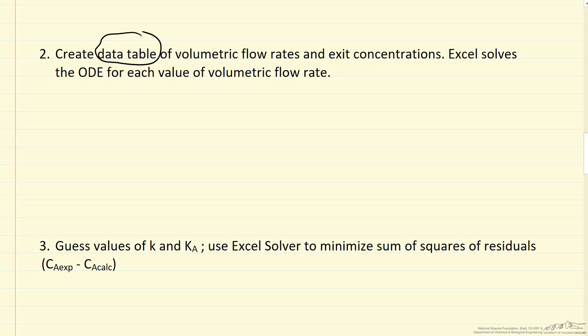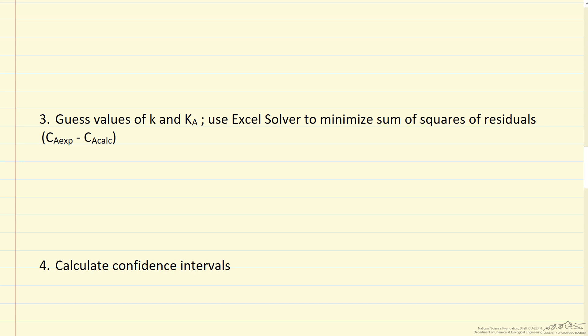And then we have to actually guess values for our two parameters and do a nonlinear regression by using Excel solver. That's minimizing the sum of squares, the difference between our experimental measurement of the exit concentration and our calculated value. And then finally, we're going to calculate confidence limits from this spreadsheet. This will also be described in a separate screencast.